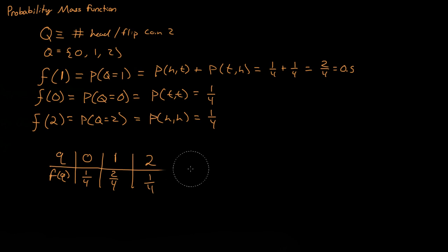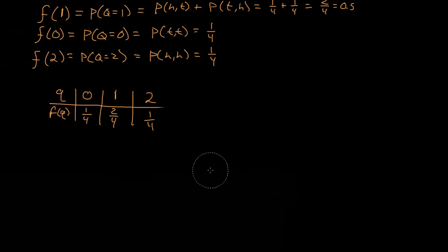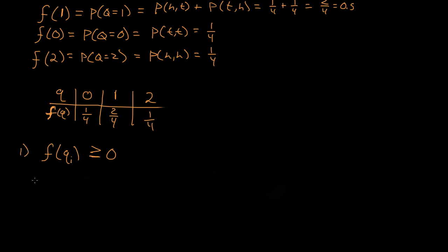Now let's do some basic definitions. If we have a probability mass function f(q), where q_i can be zero, one, two, or any number, it must be greater than or equal to zero — it can never be negative, it must always be positive. So that's our first rule.